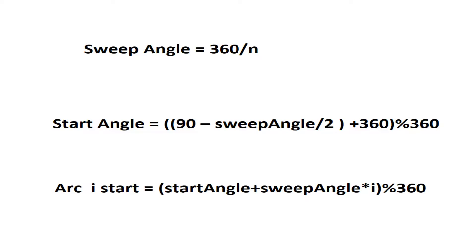First of all, we need to draw an arc that starts from a specific angle and ends after a sweep angle. With basic math, we know that we can get the sweep angle by dividing 360 by n. For the first arc, I'm assuming the start angle at 90 minus sweep angle over 2, plus 360 percentage 360, to be centered around the 90 degrees axis. Notice that the angles in the arc are counting clockwise. The arc number i will start at start angle plus sweep angle multiplied by i, percentage 360. I'm always using percentage 360 to avoid any headache.